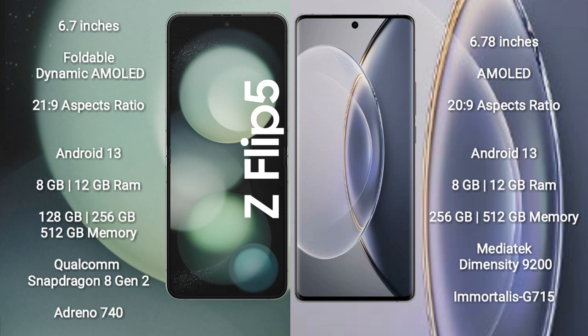Samsung Galaxy Z Flip 5 offers 128GB or 256GB internal storage, powered by the Qualcomm Snapdragon 8 Gen 2 processor. Vivo X90 Pro comes with 8GB or 12GB RAM and 256GB internal storage, powered by the MediaTek Dimensity 9200 processor with Immortalis-G715 GPU.